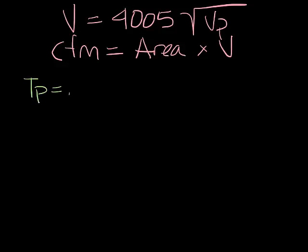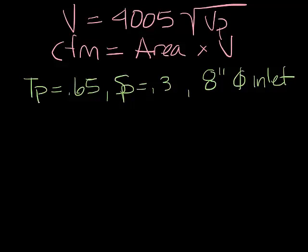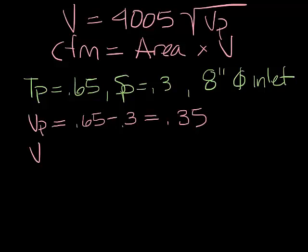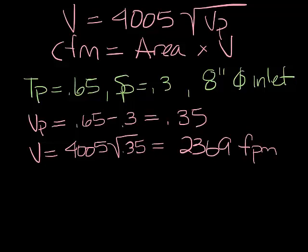So now let's look at an example. Let's say you measure a total pressure of 0.65, a static pressure of 0.3, and you have an 8-inch round inlet. So you know the velocity pressure is 0.65 minus 0.3 is 0.35, so the velocity is 4005 times the square root of the velocity pressure. Now if you work that out, you come up with a velocity of 2369 feet per minute.